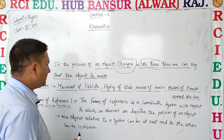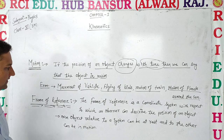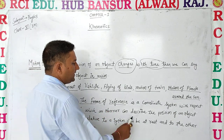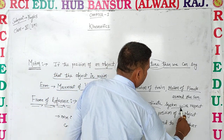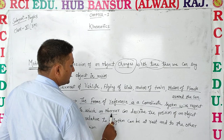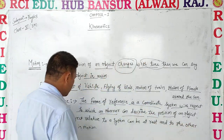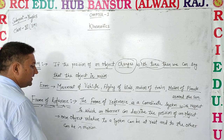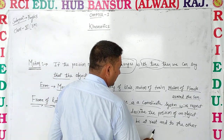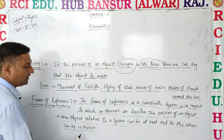Frame of Reference. The frame of reference is a coordinate system with respect to which an observer can describe the position of an object. One object relative to a system can be at rest and relative to another system can be in motion.